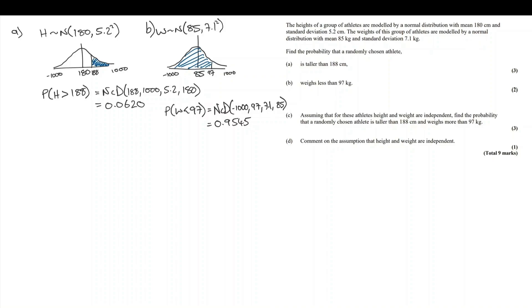Yes, we were looking for quite a large answer. Part C of the question leads with, assuming that for these athletes, height and weight are independent. Find the probability that a randomly chosen athlete is taller than 188 cm and weighs more than 97 kg.